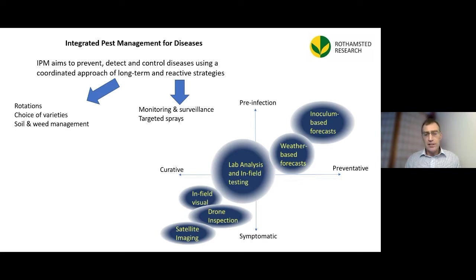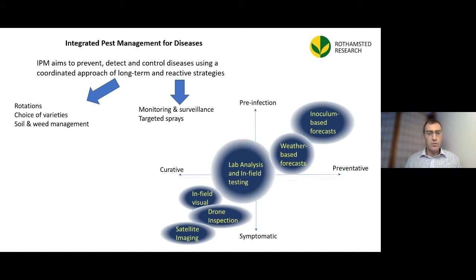That really is a fusion of different approaches — some of them long-term, traditional or 'green' methods, like rotations, choosing resistant varieties, and managing soil and weeds to reduce disease pressure. But there's also a need to be reactive, and that means targeting sprays only when needed.